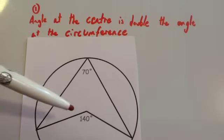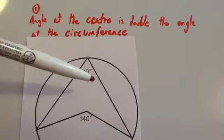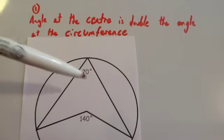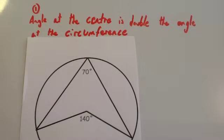The first circle theorem is that the angle at the center is double the angle at the circumference. So when you've got this shape like so, the angle here will be double the angle here. So if you're given one of them you can easily work out the other one.